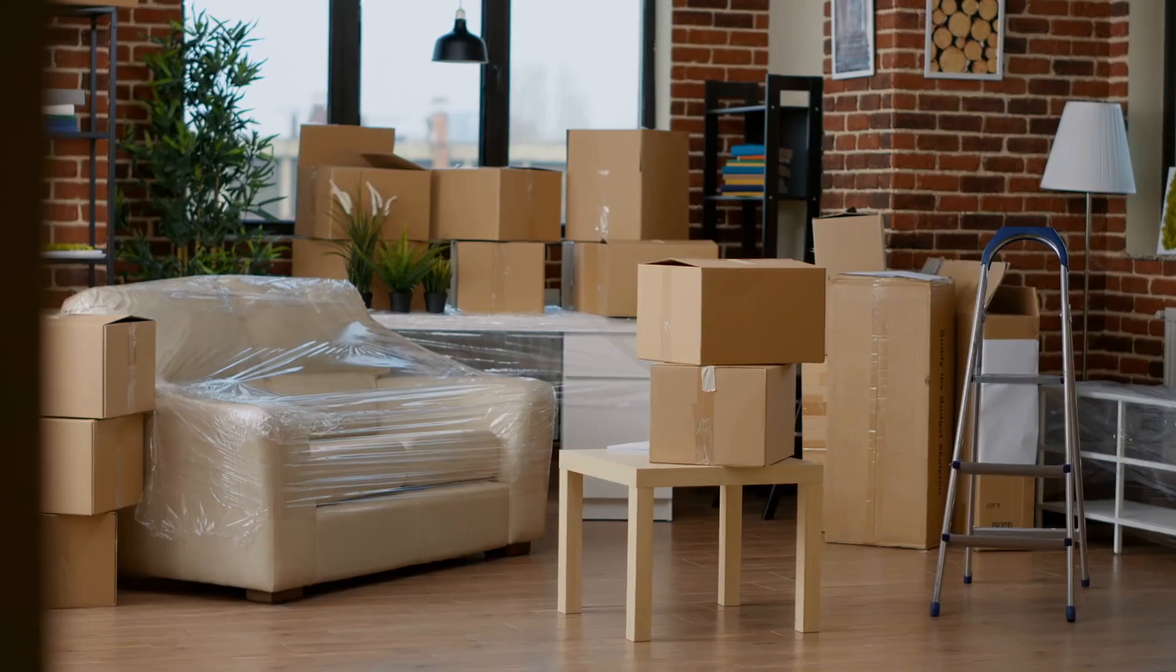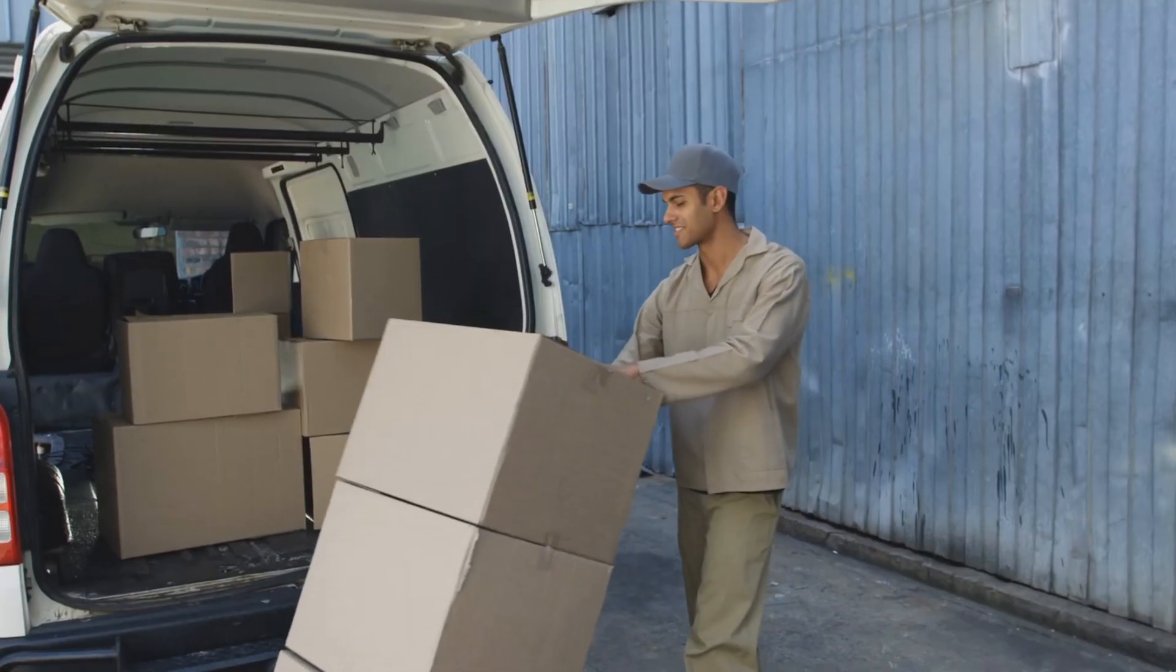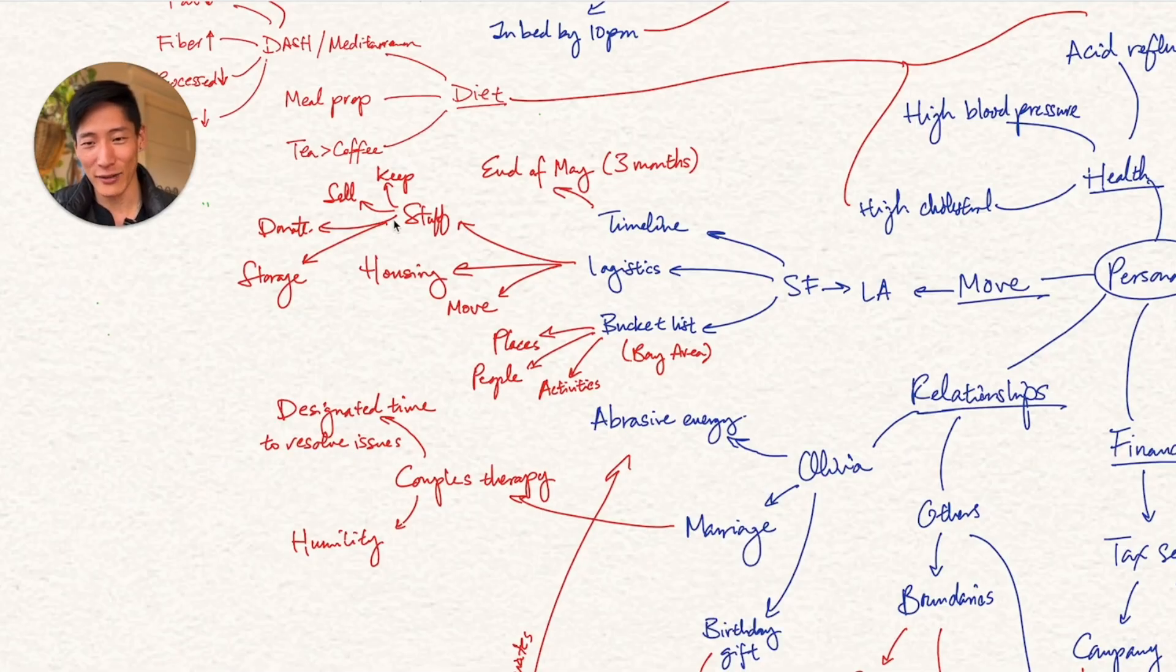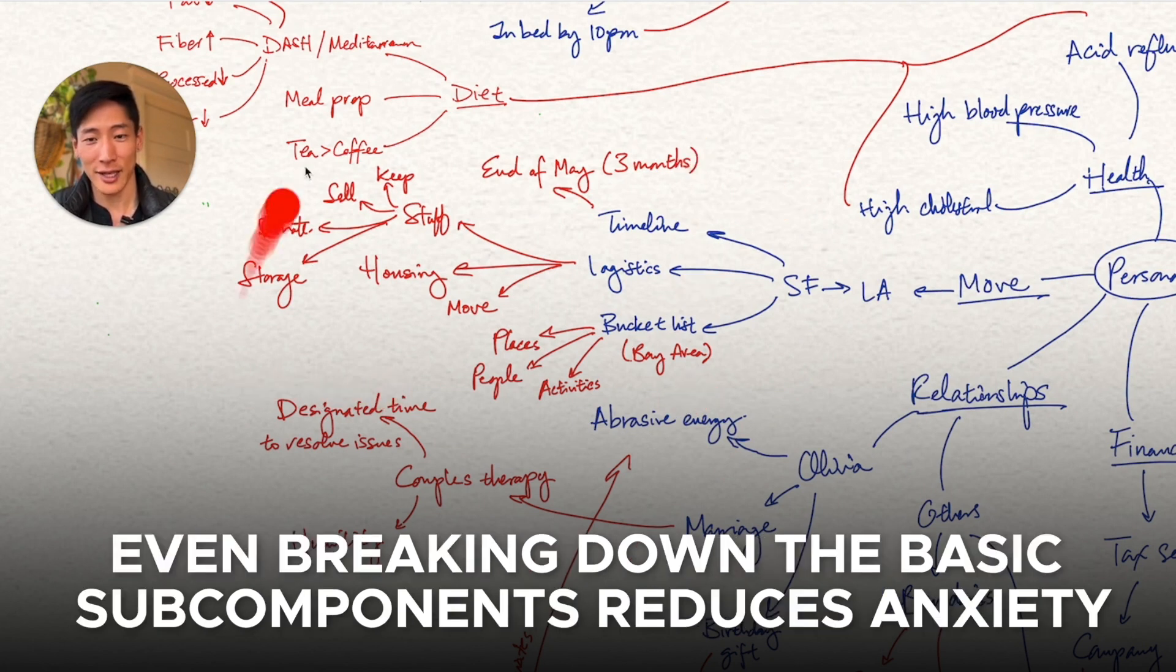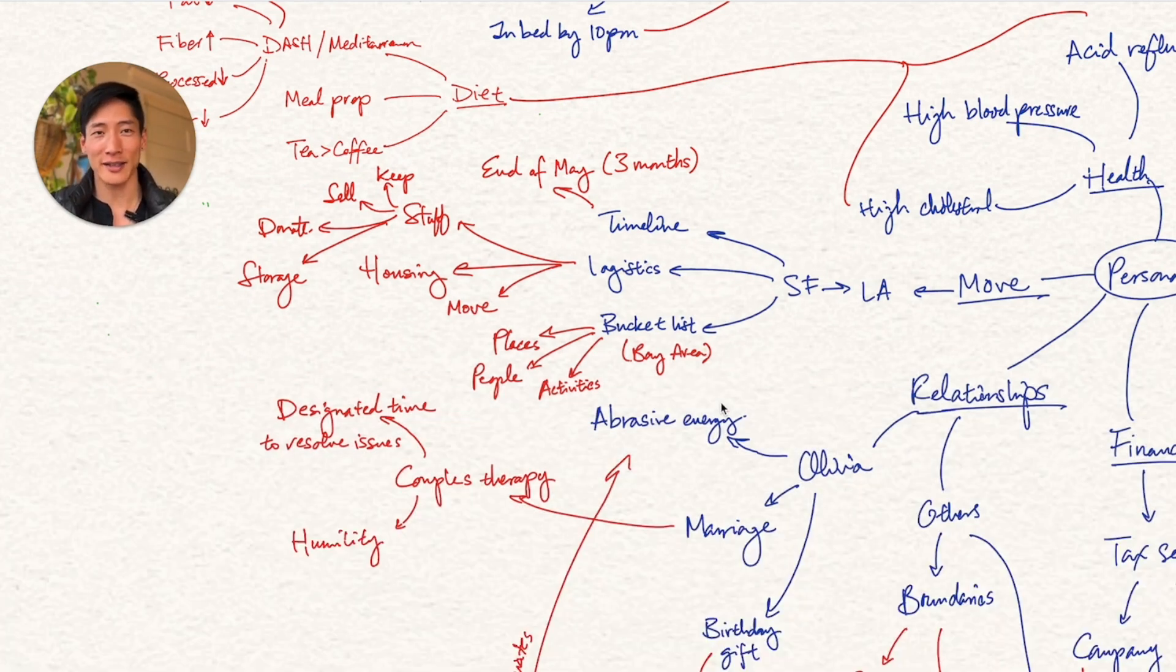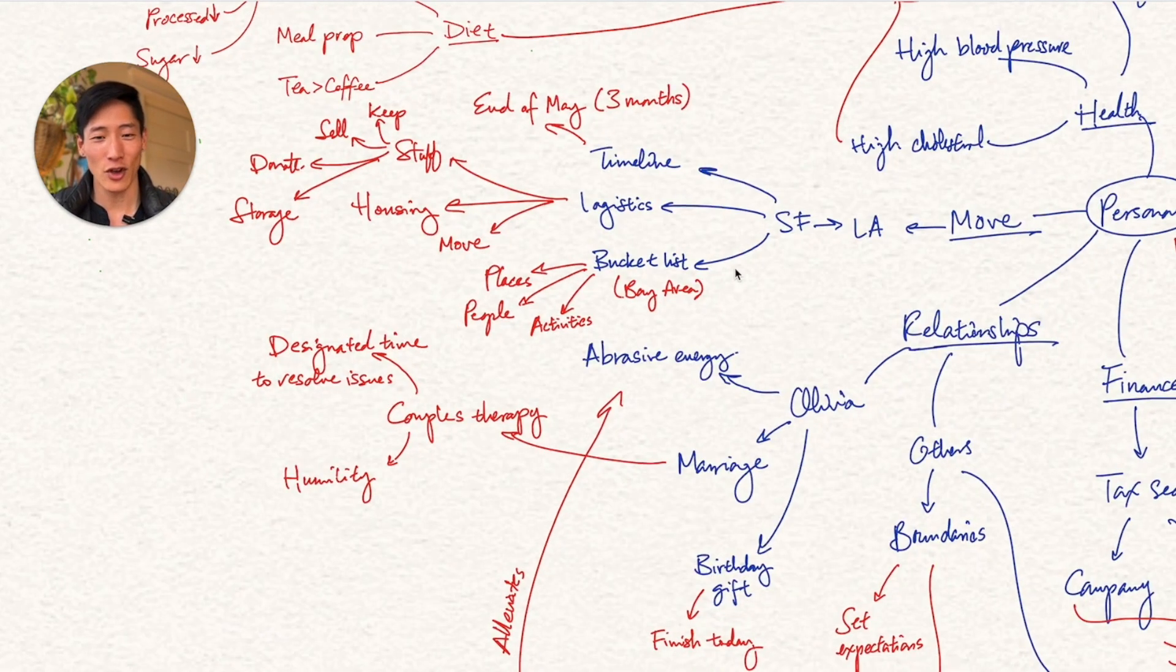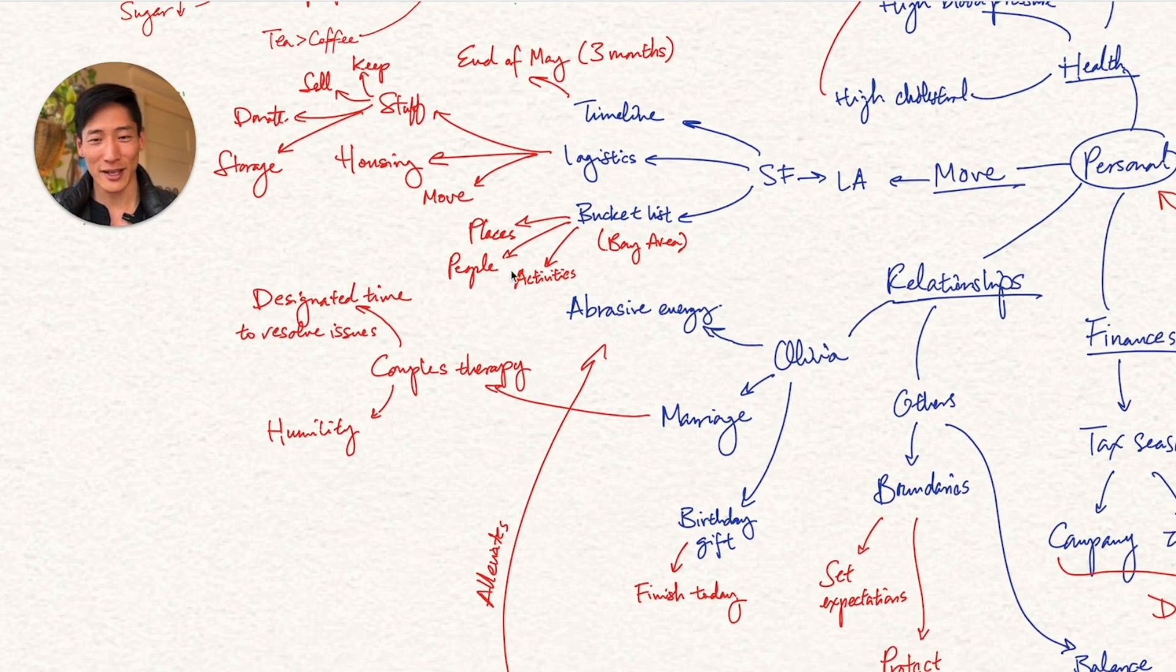And then under logistics have, okay, stuff, housing, the actual move like trucks and vans and stuff like that. Under stuff, I've expanded out what do I want to keep, sell, donate, and store. So all this can actually be its own map. But the fact that I've actually broken out the sub components makes me feel far less anxious about the move because otherwise it's just like something that's looming in the horizon. I don't have a timeline. I don't have a plan. I don't even know what the individual steps. So by breaking this out, that brings me so much more peace because I can now craft a plan around each of these components. Even the bucket list, like what kind of places do I want to visit? People I want to see, activities I want to do in the San Francisco Bay Area before I move away from here.